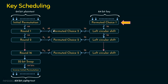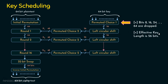Let's focus on Permuted Choice 1. The input is 64 bits and the output is 56 bits, so 8 bits are removed. The bits that are dropped are the 8th, 16th, 24th, 32nd, 40th, 48th, 56th, and 64th bits. When these 8 bits are dropped, the 64-bit key becomes a 56-bit key, referred to as the effective key. These dropped bits are the parity bits. From this 56-bit effective key, we derive the 48-bit round keys.